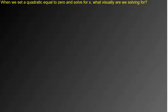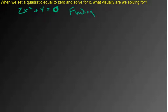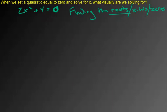The first thing I want to talk about is when we set a quadratic equal to zero and solve — what are we actually doing? This is something you do a lot in Algebra 1. You'll do problems like 2x squared plus 4 equals 0 and then solve. What we're really doing is finding the roots, or the x-intercepts, or the zeros — they all mean the same thing — of the quadratic.